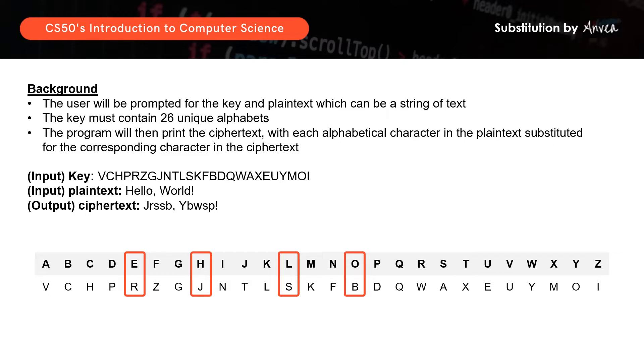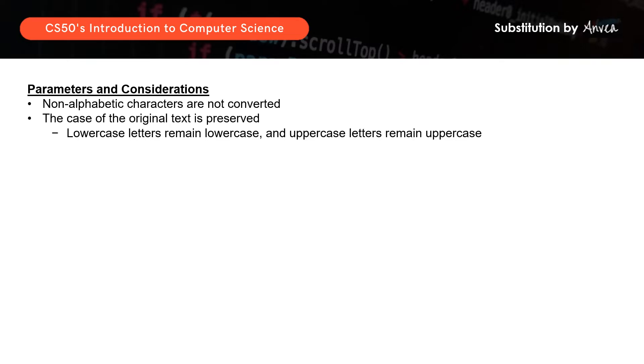Now that we understand the overall mechanism of how our program should work, let's look at some of the parameters to consider. Punctuation marks are not rotated, and the case of the original text is preserved. So if it was uppercase in plain text, the ciphertext also has to be uppercase. And if it was lowercase in plain text, likewise, it has to be lowercase in ciphertext.